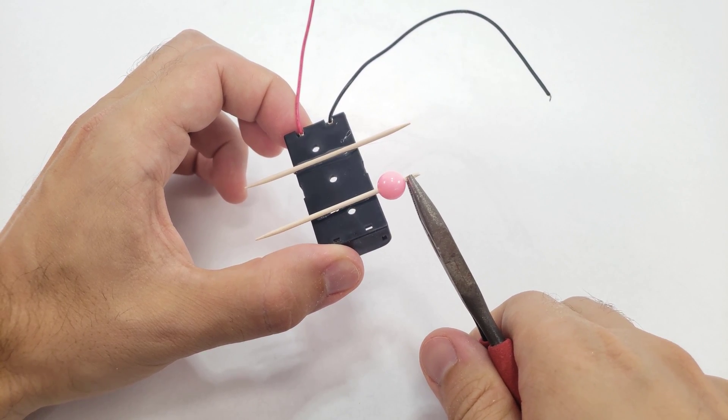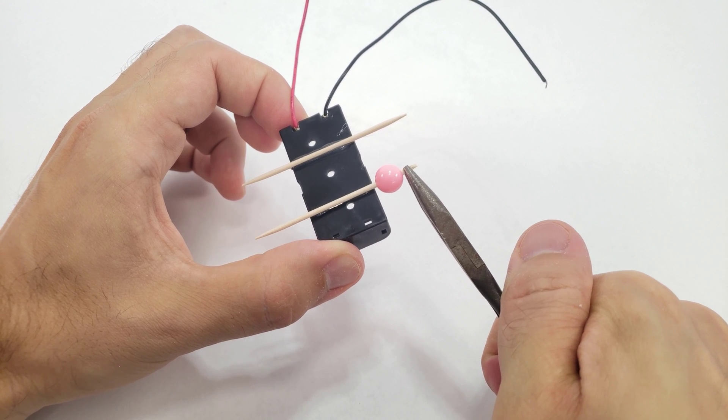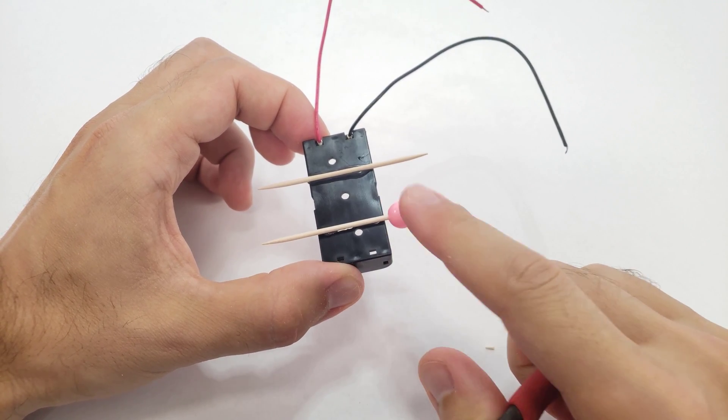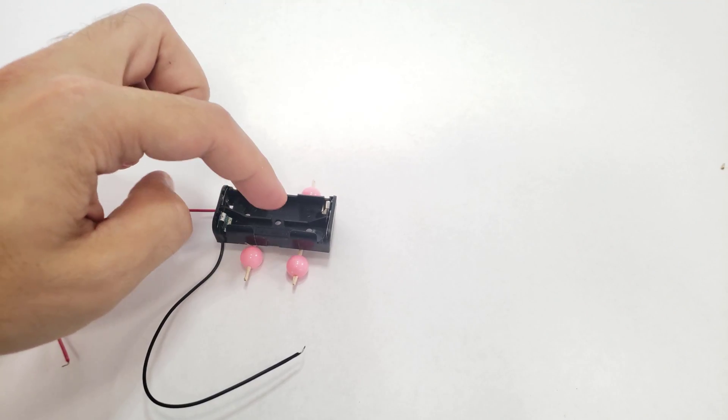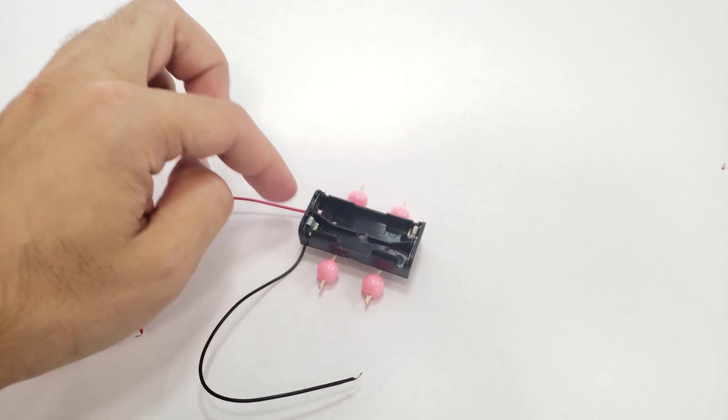Finally, use the flat part of the pliers to crimp the toothpick to flatten and widen the end. This will prevent the bead from sliding off. Repeat this for the other three wheels and you should have a car that can roll.